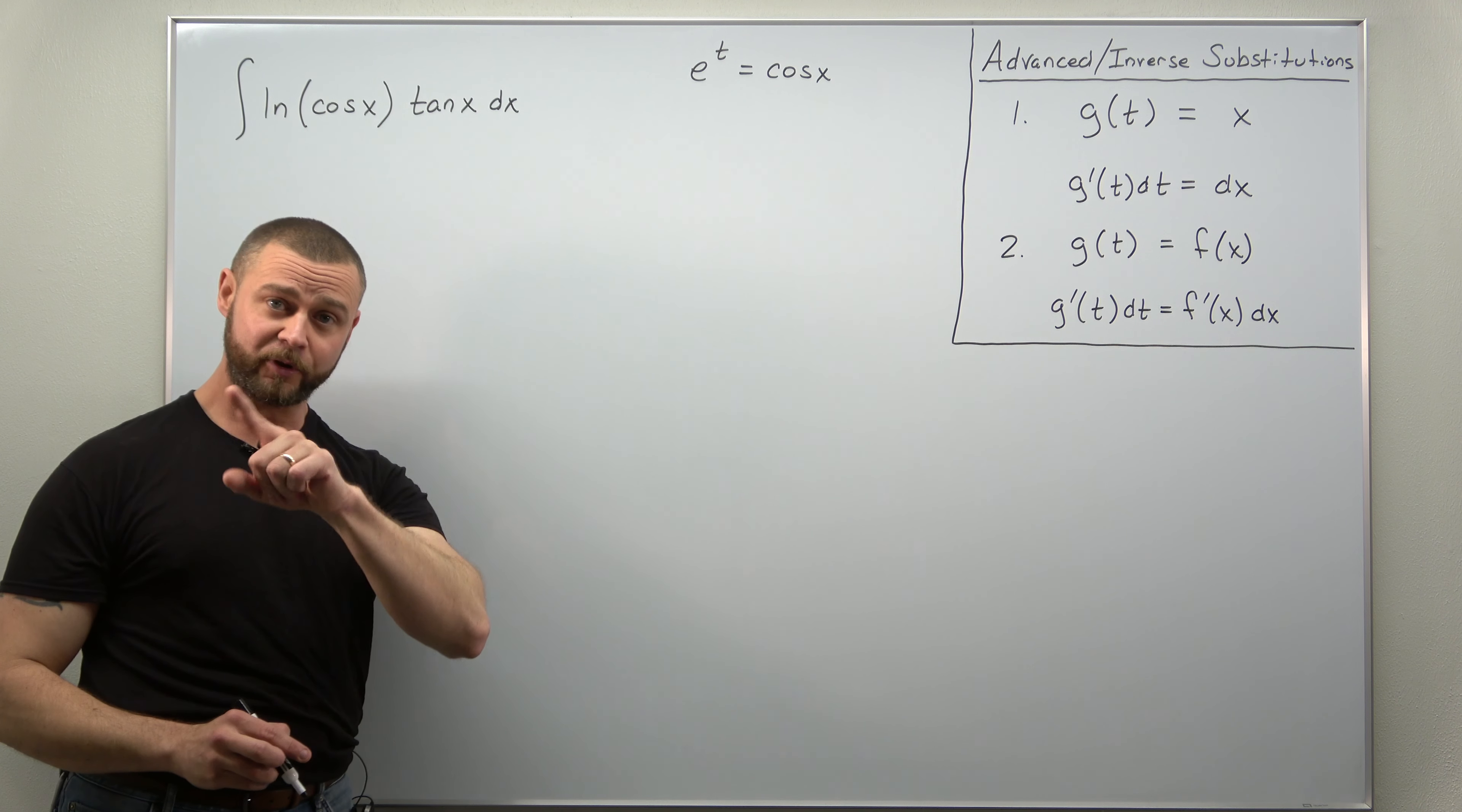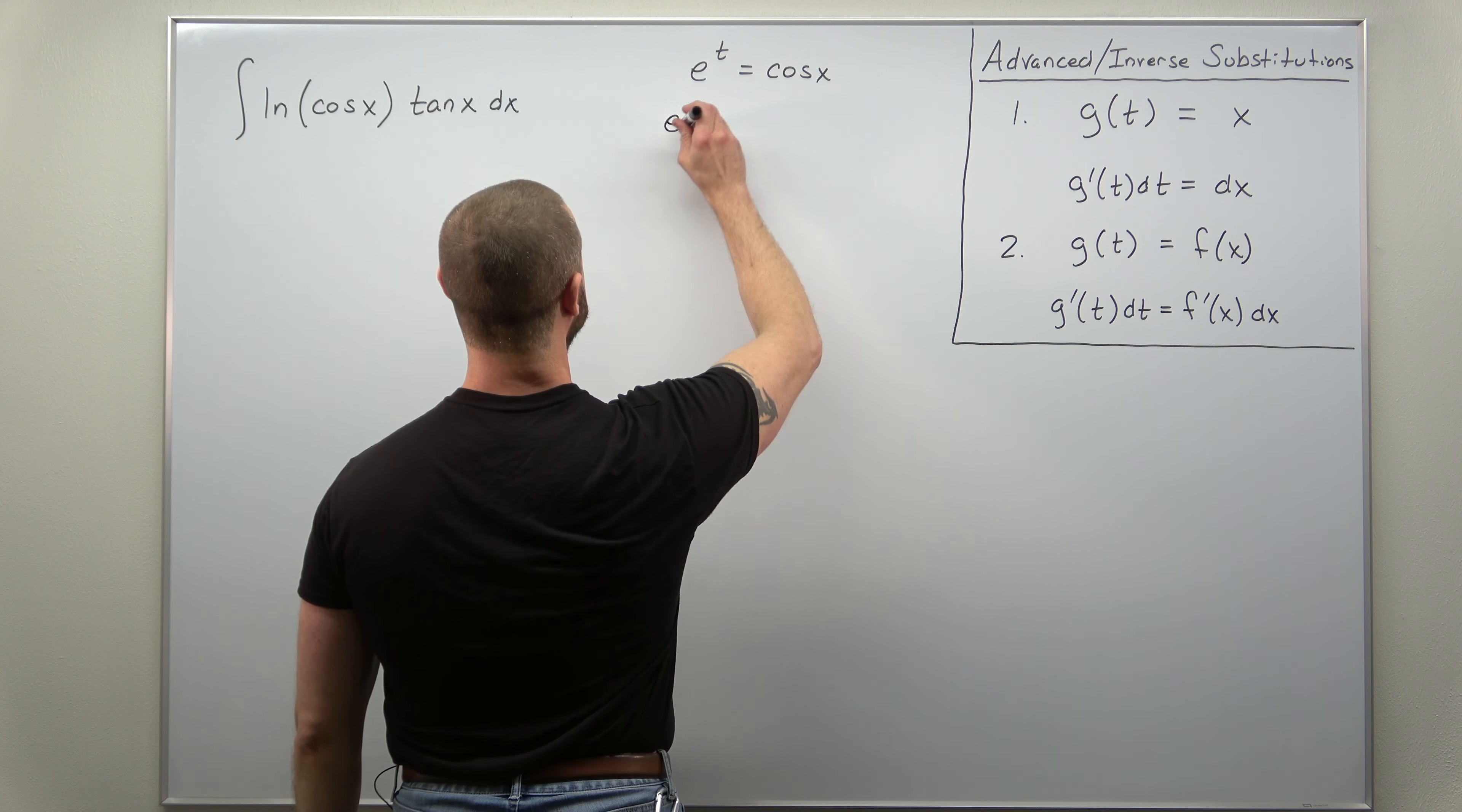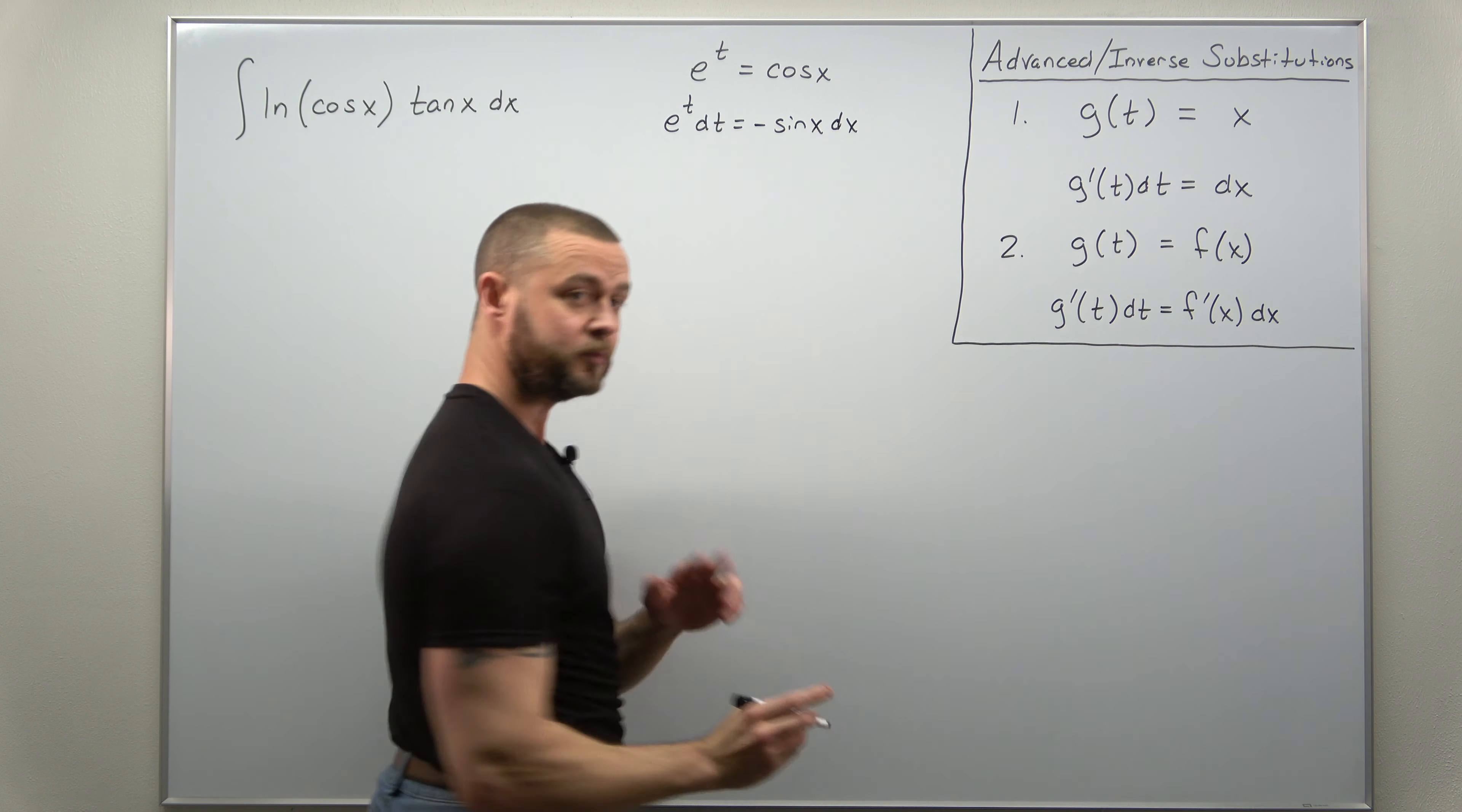Now we still need to properly convert from an integral in terms of x to now an integral in terms of t. So we need to calculate a differential here, basically just differentiate the exponential function and the cosine function. We'll get e to the t dt equals now the derivative of cosine of x, negative sine of x dx.